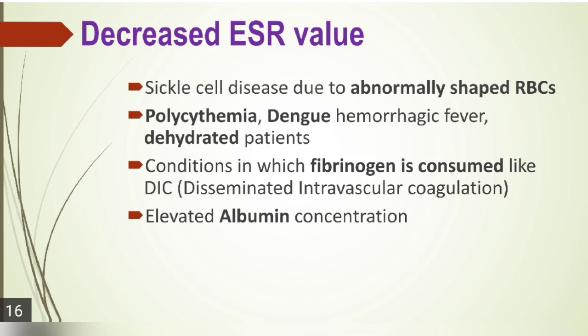Decreased ESR values: ESR is reduced in sickle cell disease due to abnormally shaped RBCs, polycythemia, dengue fever, dehydrated patients, and conditions in which fibrinogen is consumed such as DIC (disseminated intravascular coagulation), where all fibrinogen is consumed so RBC sedimentation occurs very slowly. Elevated albumin concentration also decreases ESR.